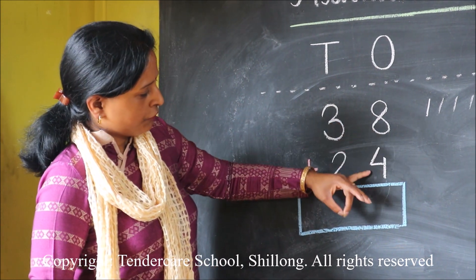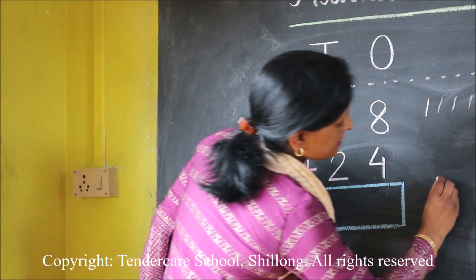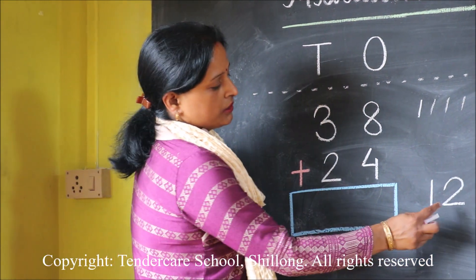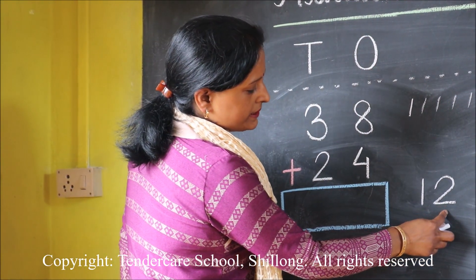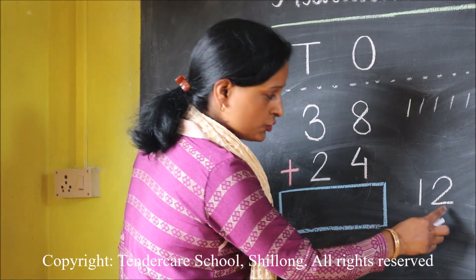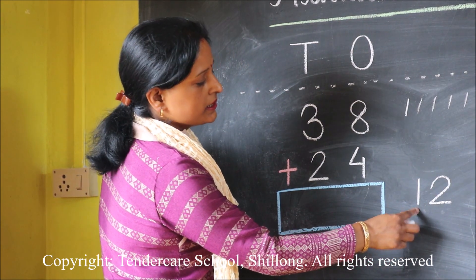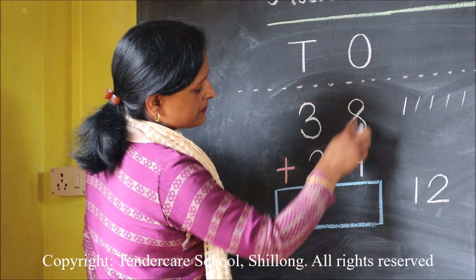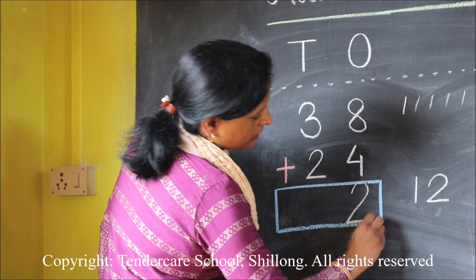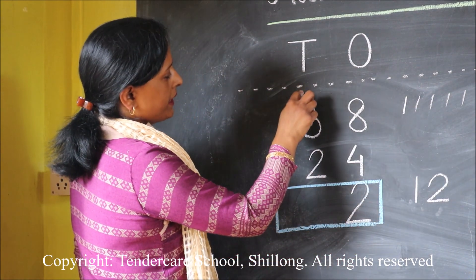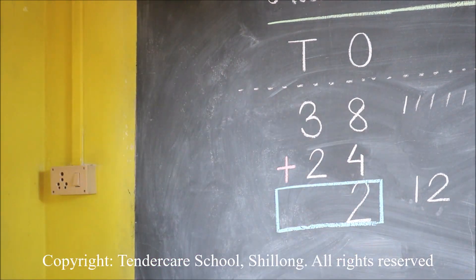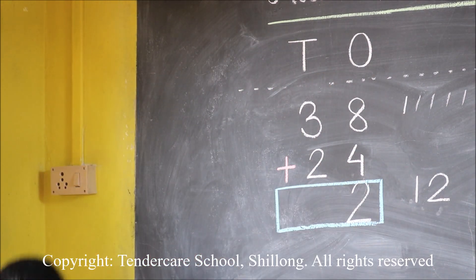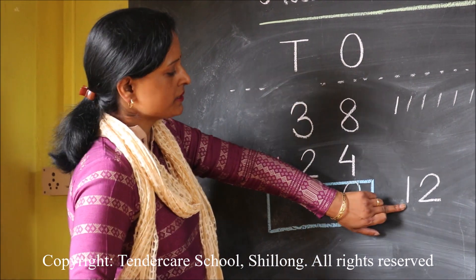After adding 8 and 4 the answer I have got is 12. This is the way we write 12. In 12, what is the digit in the ones place? It is 2. And the digit in the tens place is 1. So let me write this 2 in the ones place, and this 1 will be carried over to the tens place. I told you to leave a line here — so here I will carry this 1.